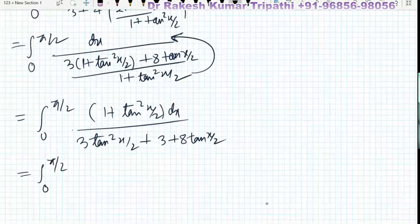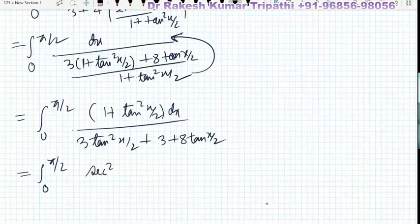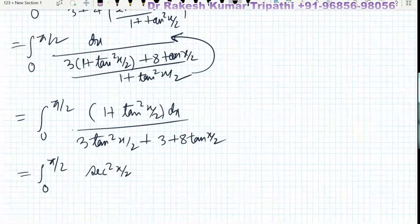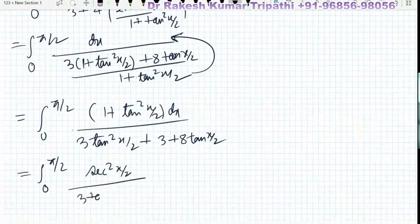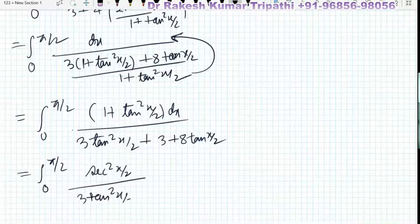The integral from 0 to π/2 has (1 + tan²(x/2)) in the numerator, and the denominator is 3tan²(x/2) + 8tan(x/2) + 3.